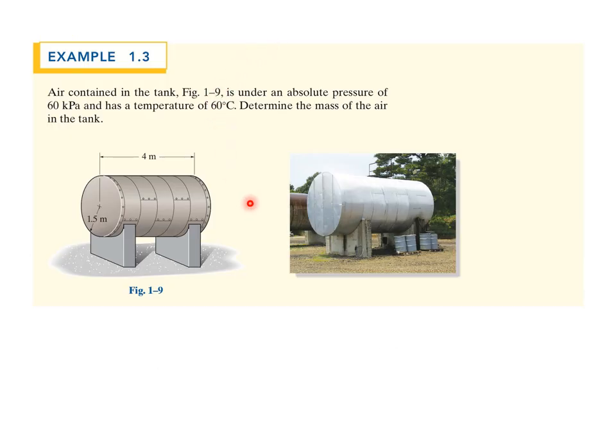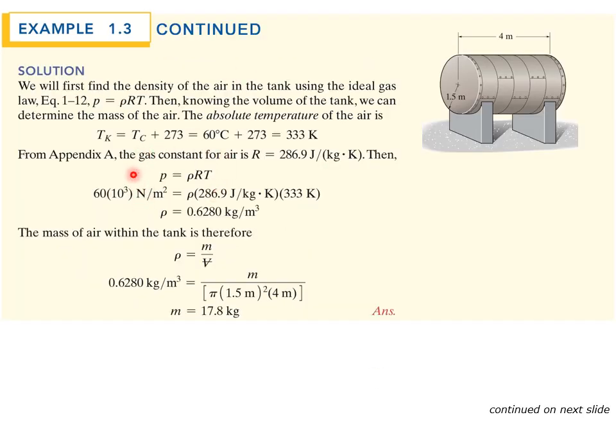So let's take a look at this example 1.3. This is using the ideal gas law. So we have a tank. It's an air tank. It's full of air. And it has, it's under absolute pressure of 60 kilopascals. And that's a temperature of 60 degrees C. Determine the mass of the air in the tank. So here you can see, it gives us the dimensions of the tank. It's 1.5 meter radius and a 4 meter length. So we know we're gonna use the ideal gas law that we just talked about. First thing is that we know that he gives us, tells us the tank is full of air at 60 degrees C. So we're gonna have to convert that to Kelvin. Because remember again, in the ideal gas law, temperature has to be in Kelvin.